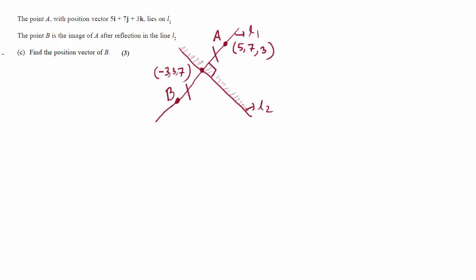Question C is about geometry. We know that L1 and L2 intersect at the position vector minus 3I plus 3J plus 7K, which can be written as the point minus 3, 3, 7. L1 and L2 are perpendicular. Point A has position vector 5, 7, 3. If line L2 is used as a mirror, the reflection of A would be B, meaning AB has its midpoint on line L2.